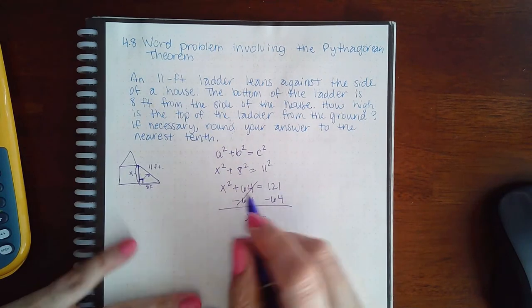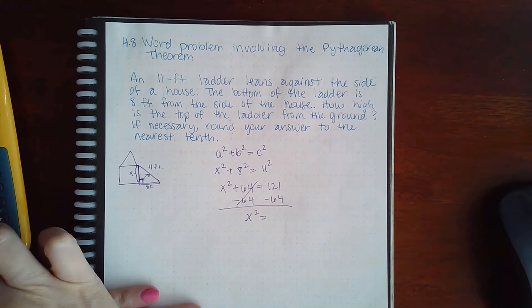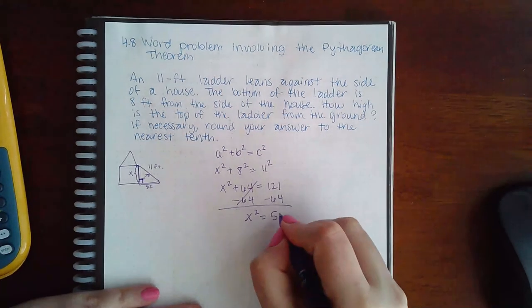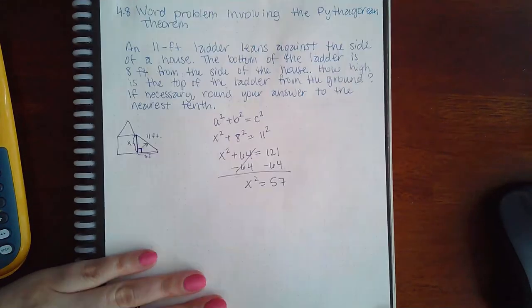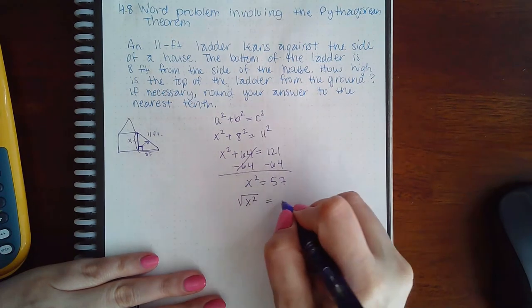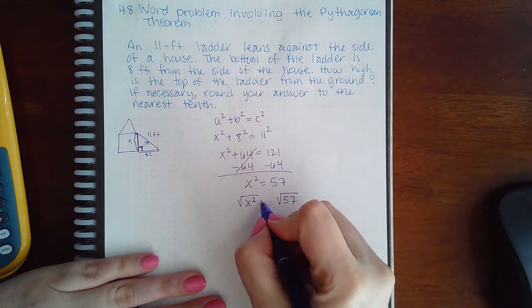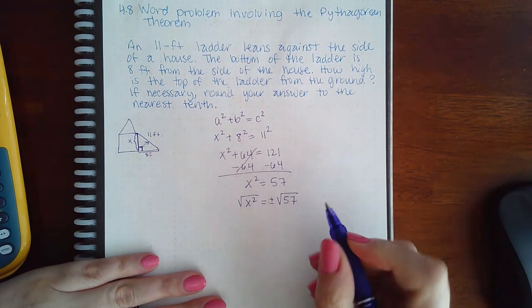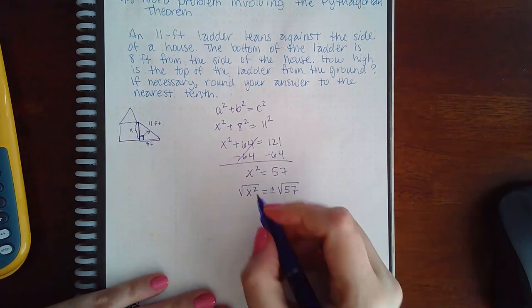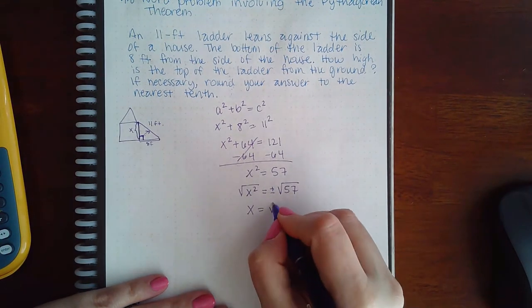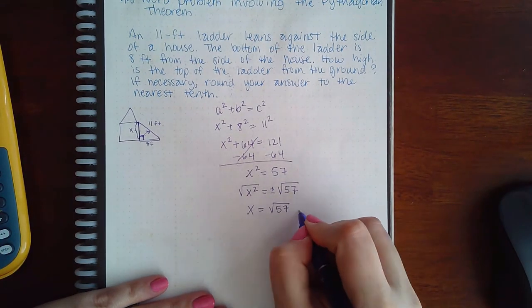When you take the square root on both sides to get x, you have to remember that any time you take the square root on both sides, you're automatically going to get two answers, plus or minus. So I get x equals positive square root of 57 and negative square root of 57.